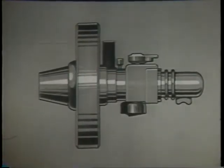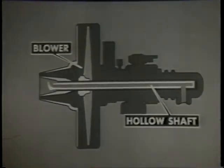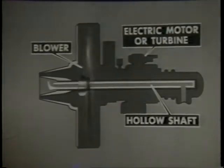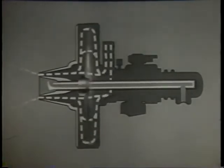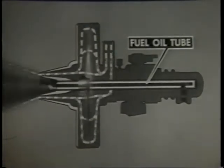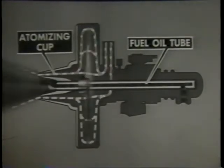In the rotary cup burner, a fan or blower is mounted on a hollow steel shaft. An electric motor or steam turbine turns the shaft and blower at high speed, providing a blast of air around the burner nozzle. The oil, under low pressure, enters through a stationary fuel oil tube inside the rotating hollow shaft and is discharged into the rotating atomizing cup. Centrifugal action forces the oil against the inner surface of the atomizing cup and causes the oil to leave the rim as a hollow cone. The meeting of the oil and the air from the blower further atomizes the oil.